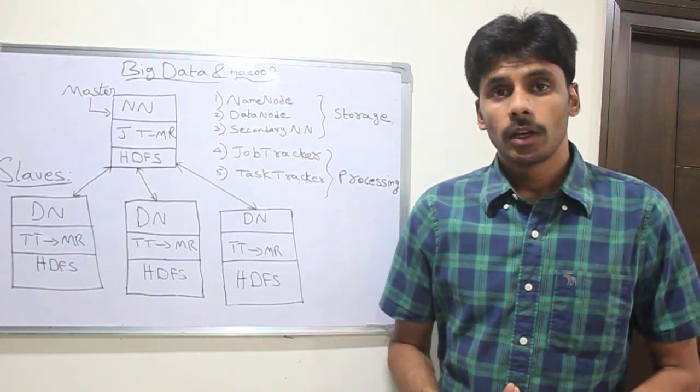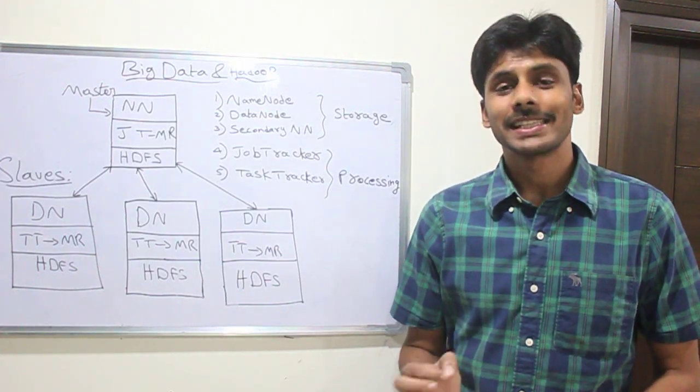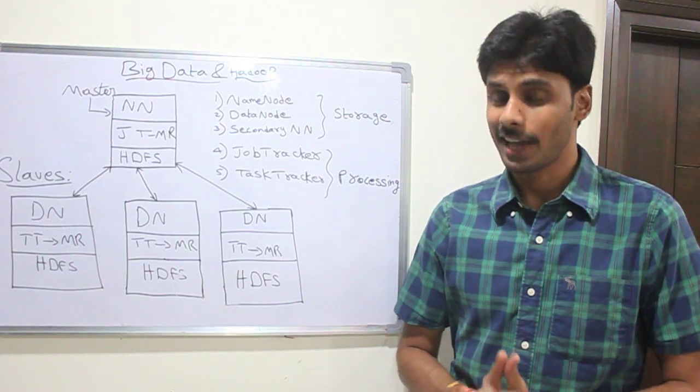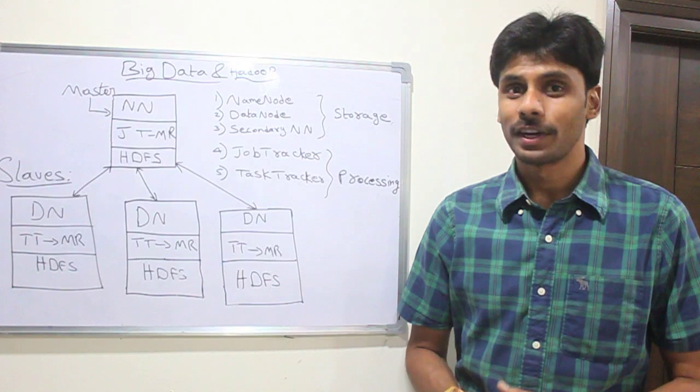Right now as I speak, Google gets around 2 million searches every minute and Facebook gets 34,000 likes every minute. That's a lot of data to deal with.